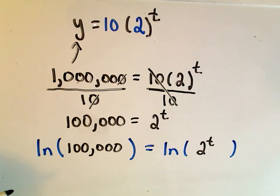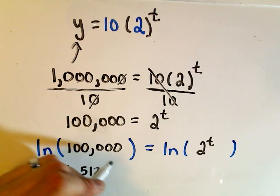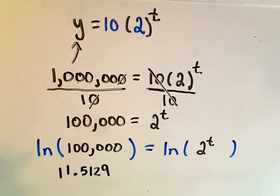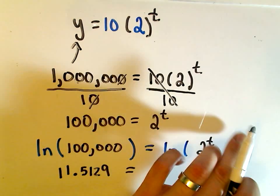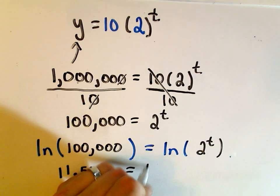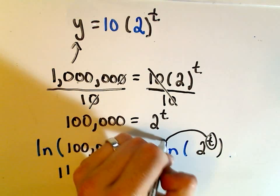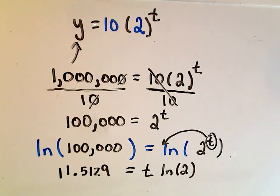I can compute the natural log of 100,000, so let me do that. So I got the natural logarithm of 100,000 to be roughly equal to 11.5129. That's as far I think as I'm going to carry that out. Remember one of the properties of logarithms is we can pull the exponent out front. So this t comes out front and then it disappears from the exponent.